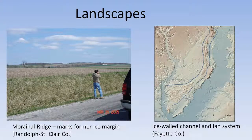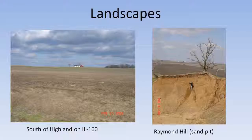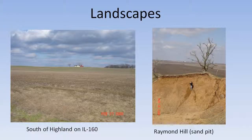A couple other examples of the landscapes: here's a moranic ridge, we believe, south of Highland, Illinois, and on the right a kame-like hill with sand deposits overlooking a lake plain.